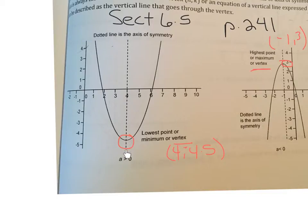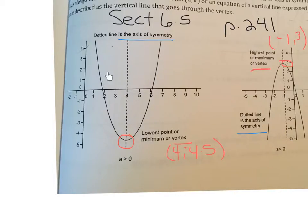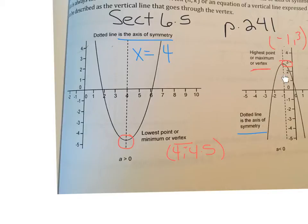The second thing to identify is the axis of symmetry — the dotted line you see on these graphs. The axis of symmetry is an imaginary line that runs through the center of your parabola right through your vertex, and it identifies that the parabola is a mirror image on either side. We identify it with an equation: this one is x equals 4, and this one is x equals negative 1.